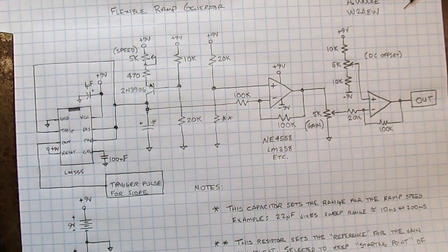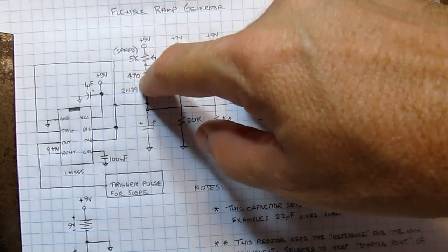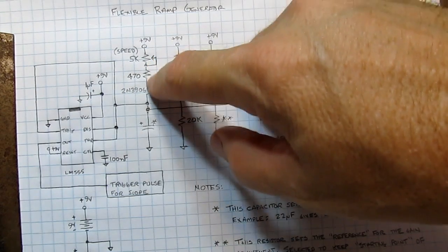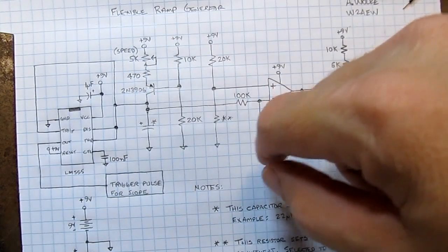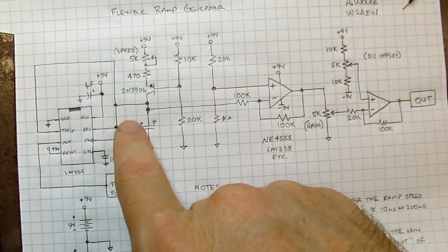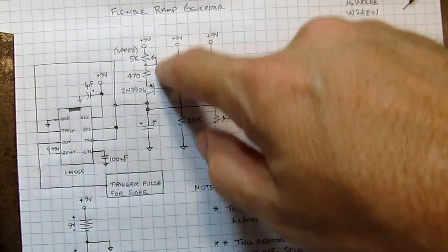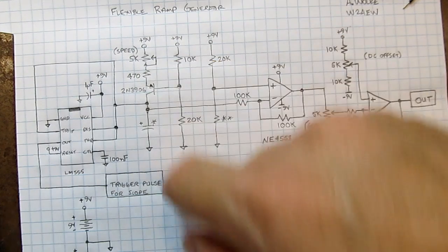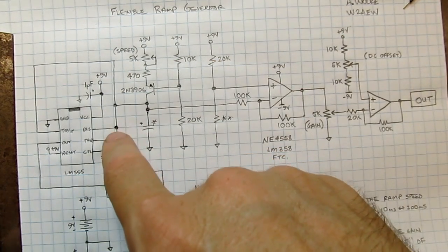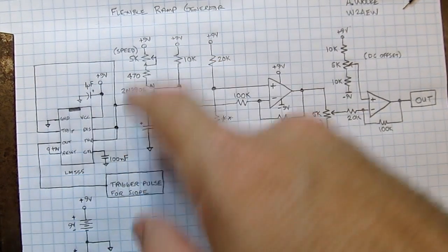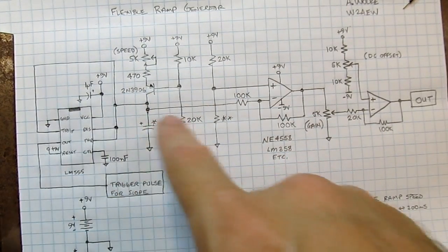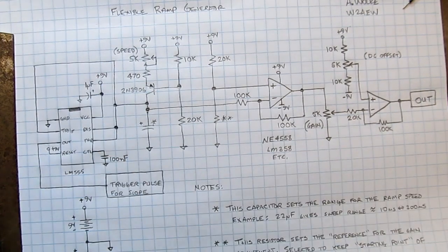Now, if you wanted to have a much wider range in terms of sweep speed than you can get with just this arrangement, you could switch in various size capacitors. This will give you more than a decade of adjustment range, the way I have it arranged, but you could put in, say a 22 microfarad cap, a 2.2 microfarad cap, or just go up or down to make it faster or slower.